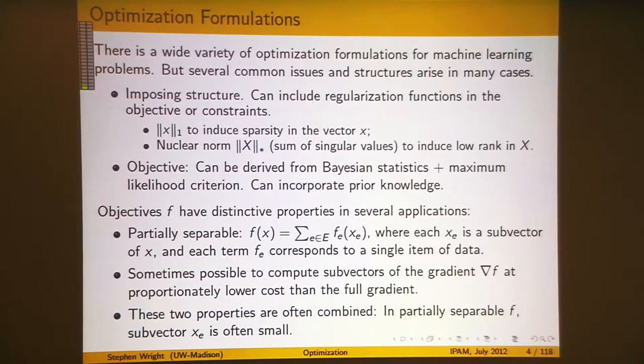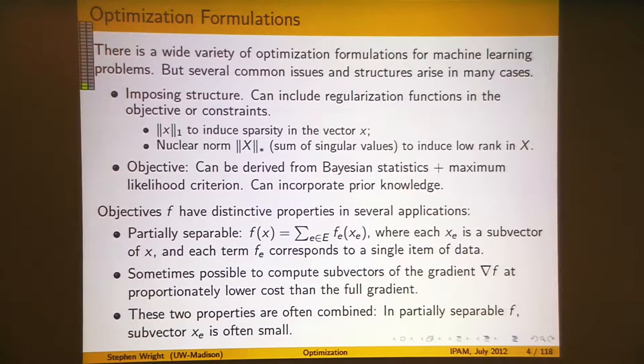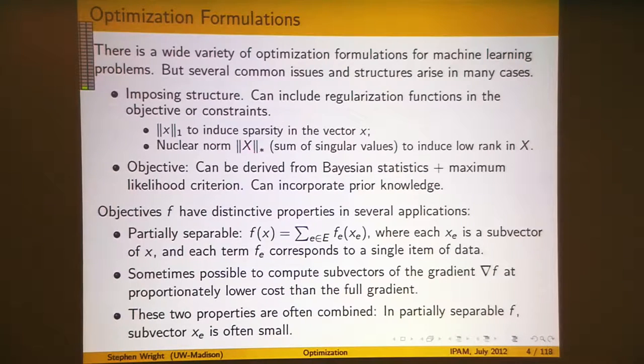One contribution of compressed sensing was to explain exactly why the L1 norm works so well — it's convex, yet it induces this non-convex sparse structure. For matrix variables, there's the nuclear norm — the sum of singular values of x — which plays a similar role to L1. Adding some multiple of the nuclear norm to the objective and minimizing tends to give a low-rank solution, setting most singular values to zero.